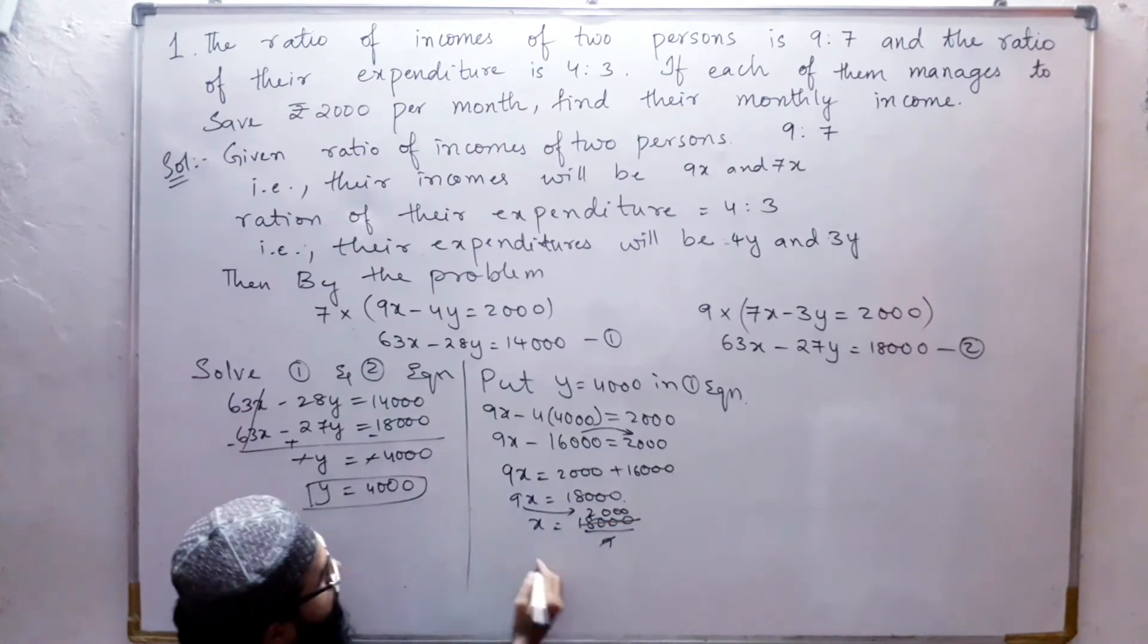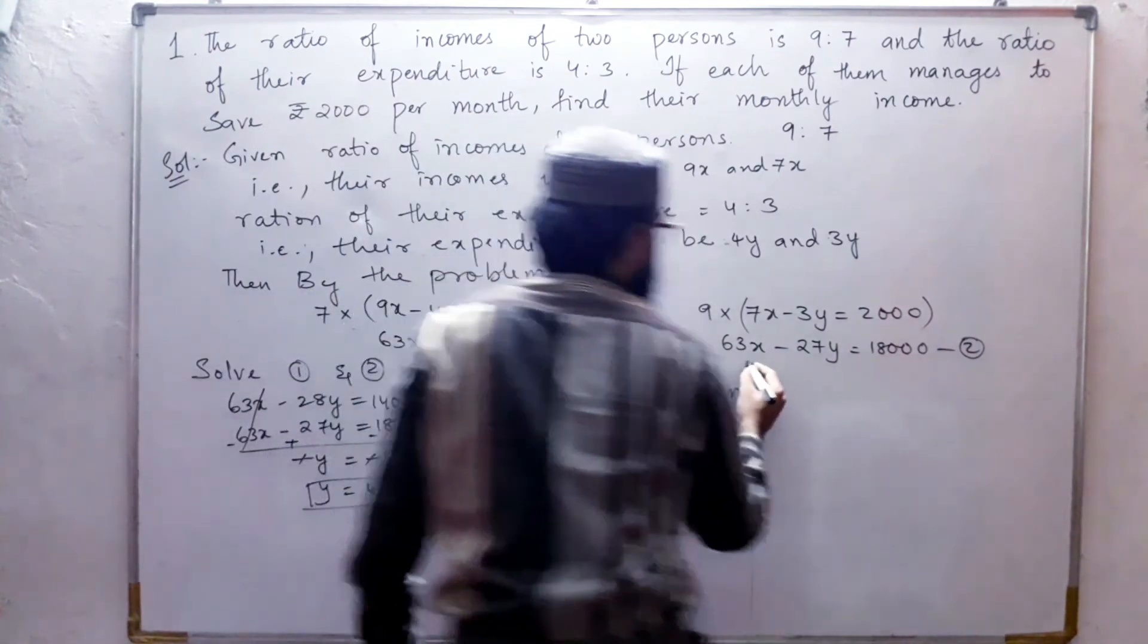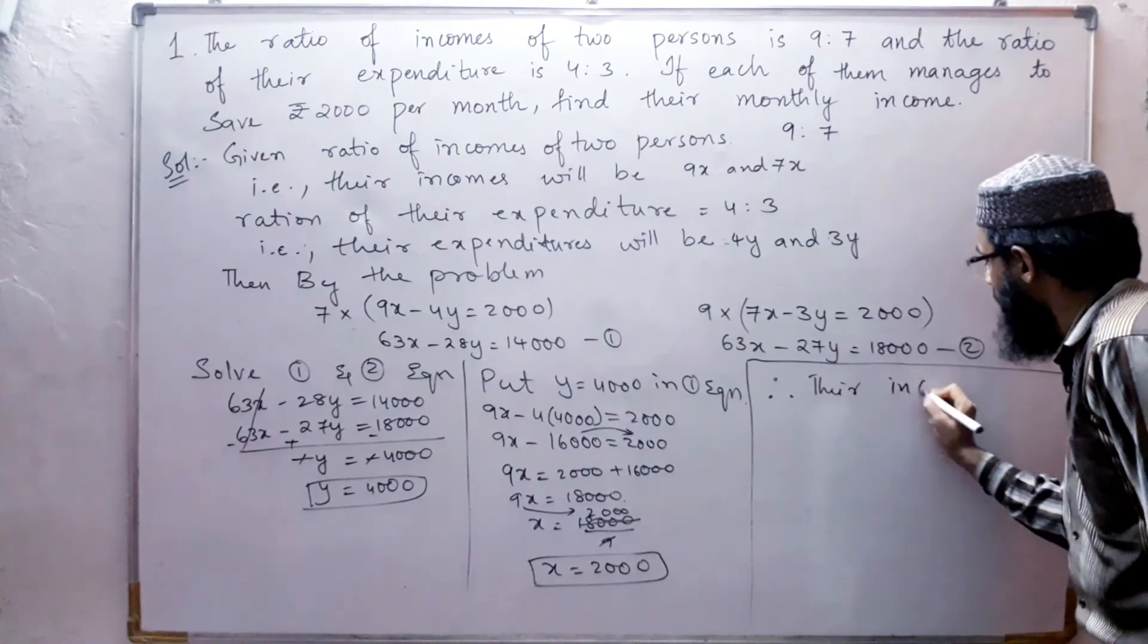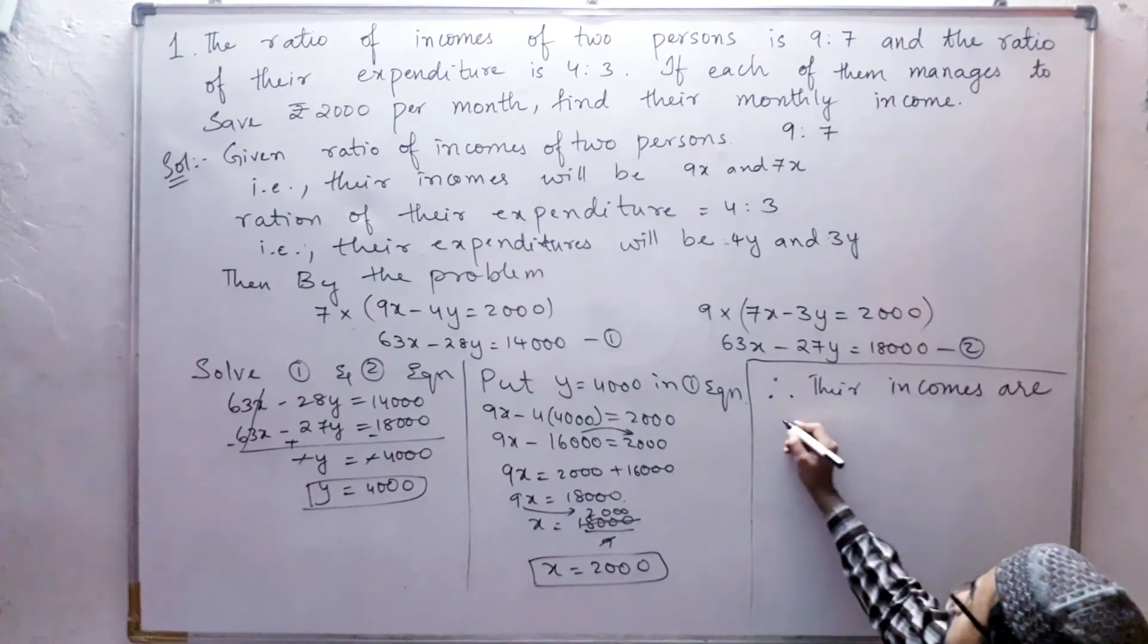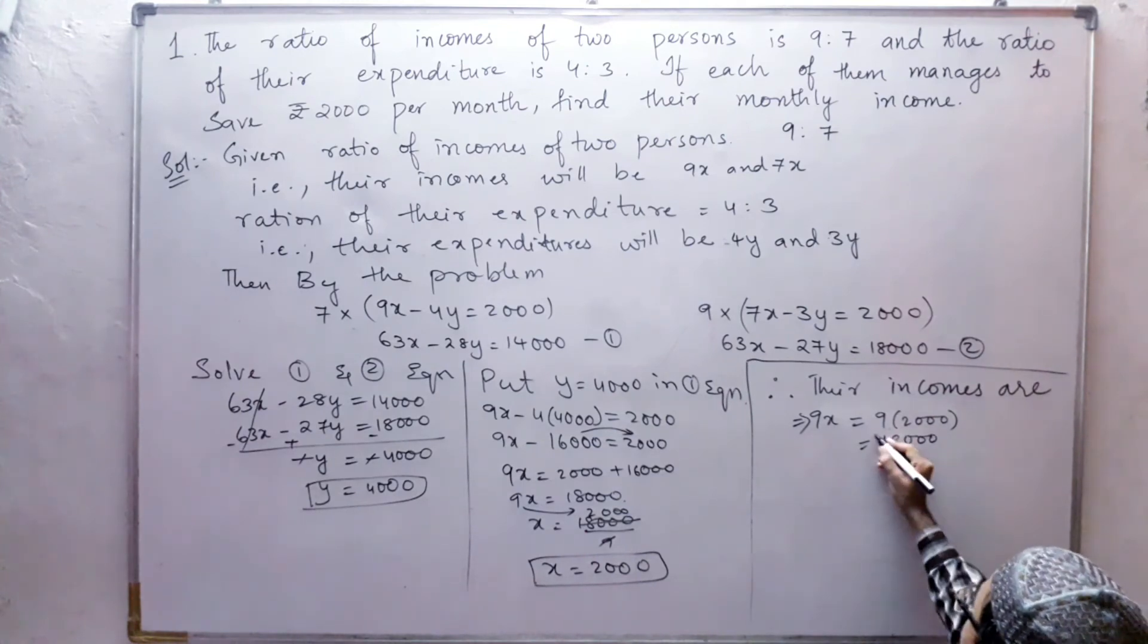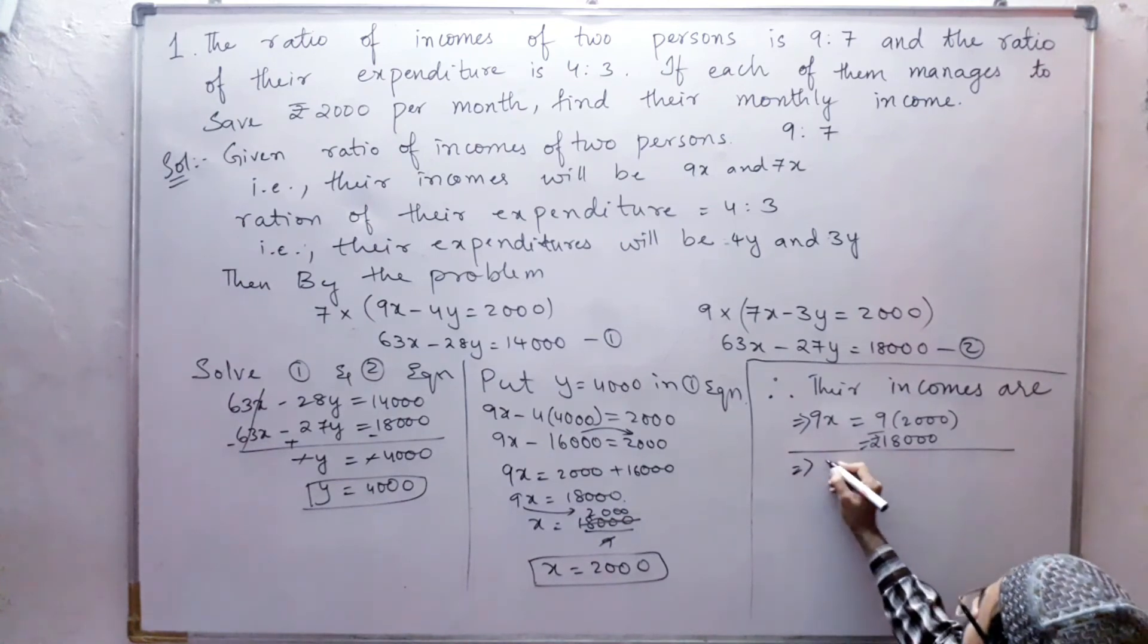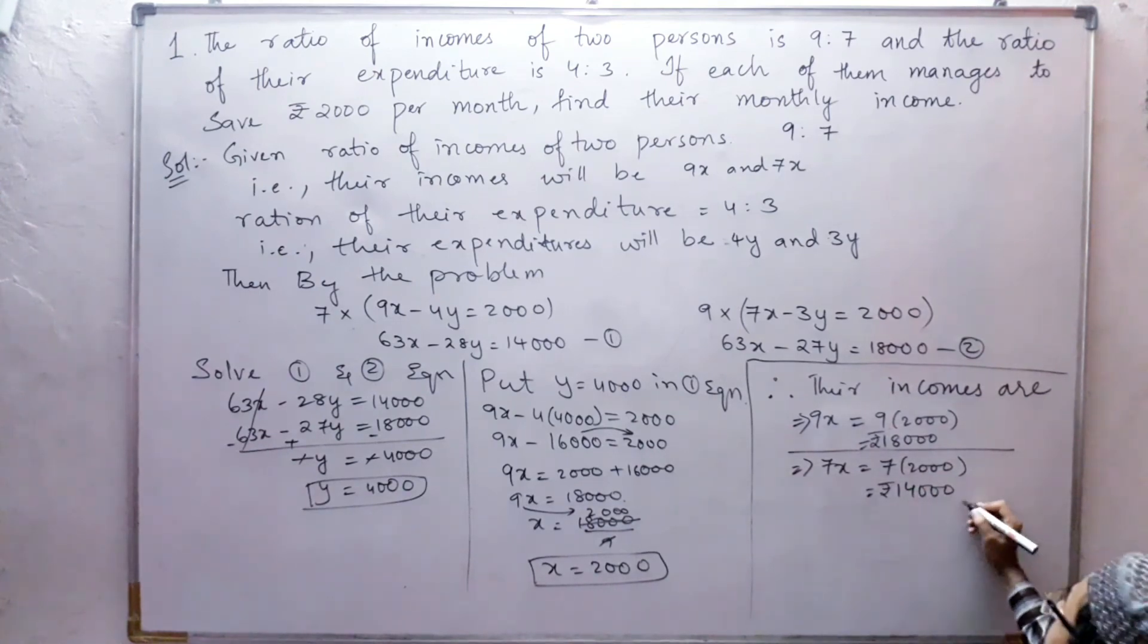Let us find their incomes. Therefore, their incomes are: income of the first person is 9x, so 9 into 2000, which is 18,000. Income of the second person is 7x, so 7 into 2000, which is 14,000.